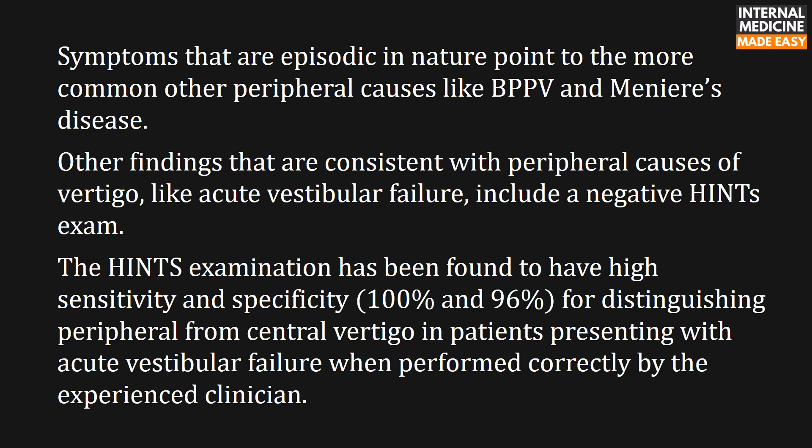Symptoms that are episodic in nature point to the more common peripheral causes like benign paroxysmal positional vertigo and Meniere's disease. Other findings consistent with peripheral causes of vertigo, like acute vestibular failure, include a negative HINTS exam. The HINTS examination has been found to have high sensitivity and specificity for distinguishing peripheral from central vertigo in patients presenting with acute vestibular failure when performed correctly by an experienced clinician.